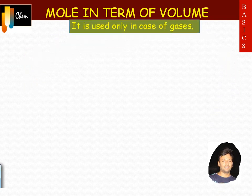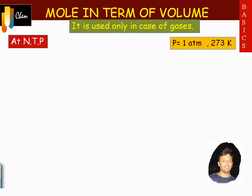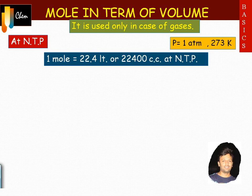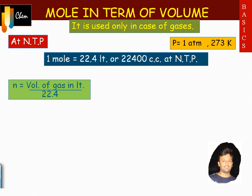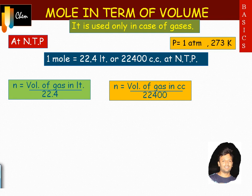In terms of volume, remember that the definition of mole in terms of volume is used only in the case of gases. At NTP (Normal Temperature and Pressure), one mole is the amount of a substance which occupies 22.4 litres or 22,400 cc of volume. The formula is: number of moles equals volume of gas in litres divided by 22.4, or volume of gas in cc divided by 22,400.